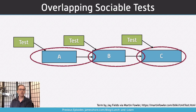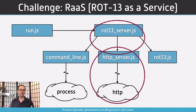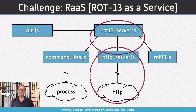As we talked about last week, you can use overlapping sociable tests to fill in those gaps. But what we've been doing up until now has basically been toy examples. So the question is, how do you work without mocks when you're working with real code? We're going to take our Route 13 application from previous episodes — a command line application that converted text using ROT13, the spoiler-hiding cipher — and turn it into a microservice: ROT13 as a service.